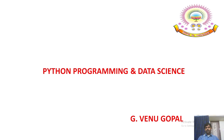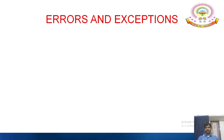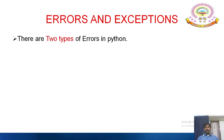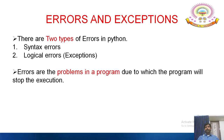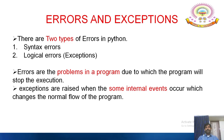Welcome students. We now see the second concept of the second unit called exceptions and errors. There are two types of errors in Python: syntax errors and logical errors, which are also called exceptions. Errors are problems in a program due to which the program will stop execution. Exceptions are raised when some internal events occur which change the normal flow of the program.